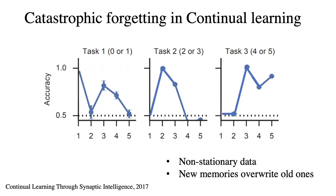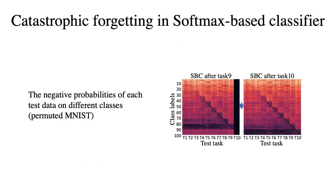Similarly, the performance of the second task drops when we train on the third task. Virtually all existing continual learning approaches are based on the softmax-based classifier, and we find that softmax normalization is one of the main reasons that causes catastrophic forgetting.